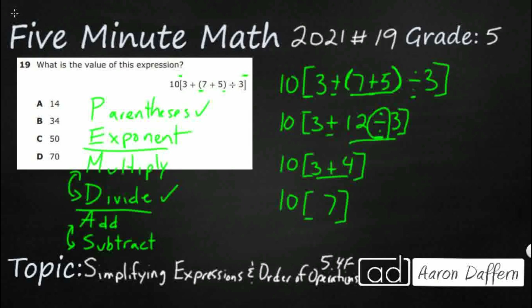And I've got 10 bracket seven. Now, if you ever see a number outside of a parentheses — and remember that this bracket serves as a parentheses — it always means multiplication. A lot of times in fifth grade and above, we don't write multiplication as an x or as a dot. We'll simply put it outside of a parentheses, and it's always assumed that we're going to multiply. So really, that's 10 times seven, which is going to be 70.